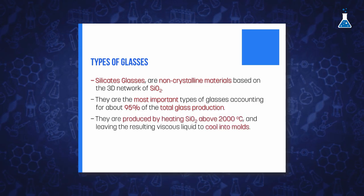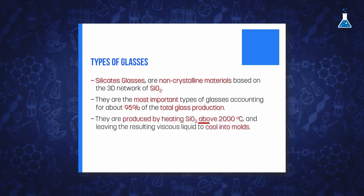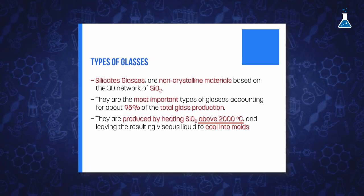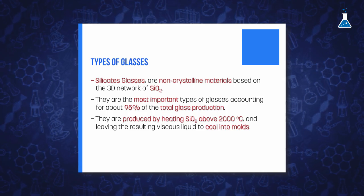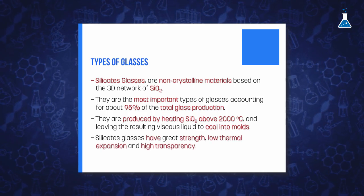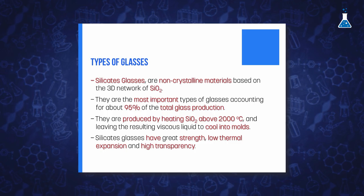Glasses are produced by heating pure silicon dioxide to about 2000 Celsius degrees, and then leaving the resulting viscous liquid to cool down into molds. The resulting materials have great strength, low thermal expansion, and high transparency. For this reason, glass has been employed as a material for more than 5000 years, and the current production could be estimated at about 100 million tons.